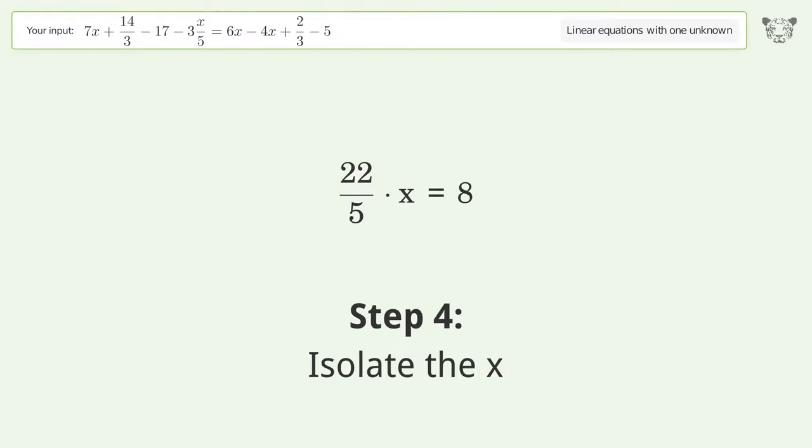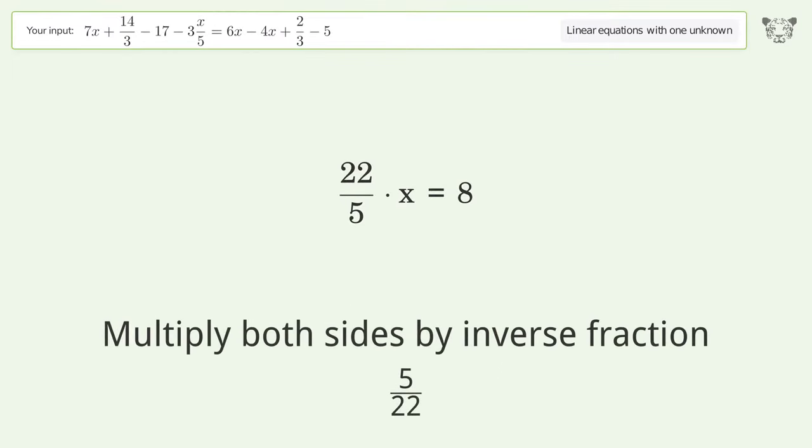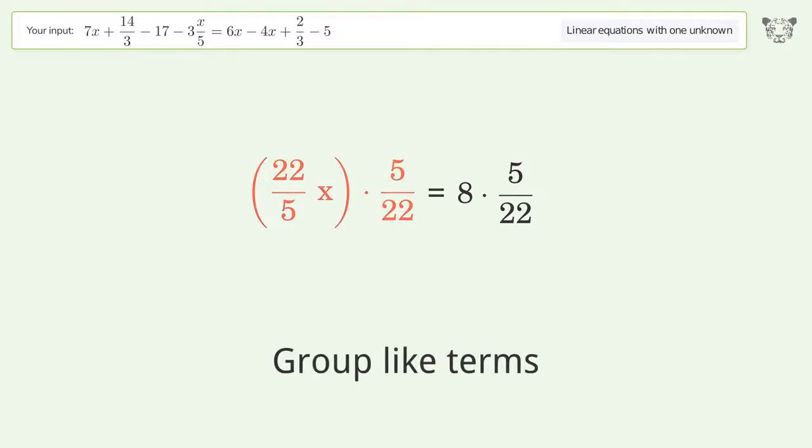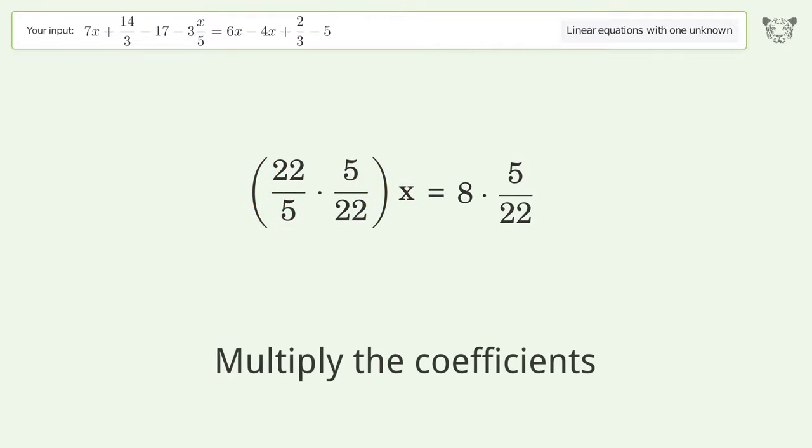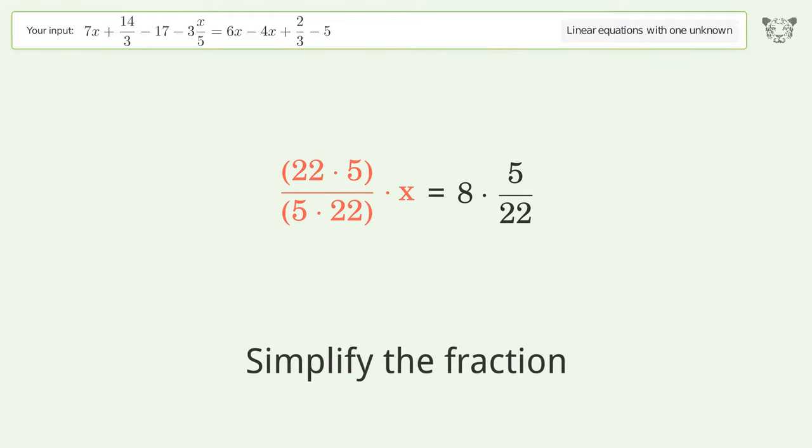Isolate the x. Multiply both sides by inverse fraction 5 over 22. Group like terms. Multiply the coefficients.